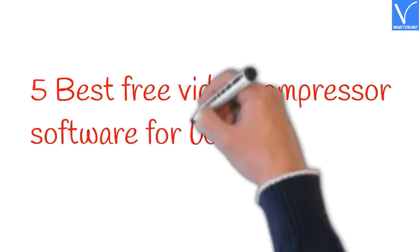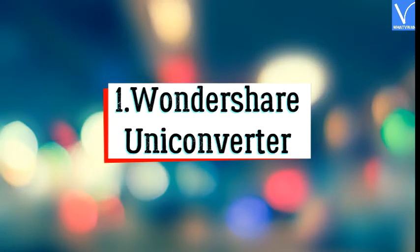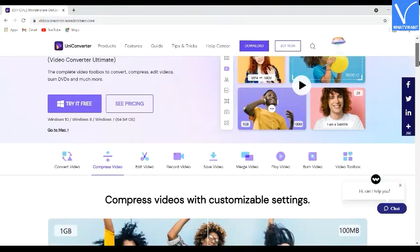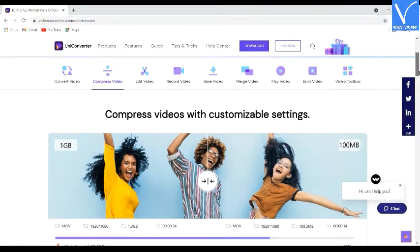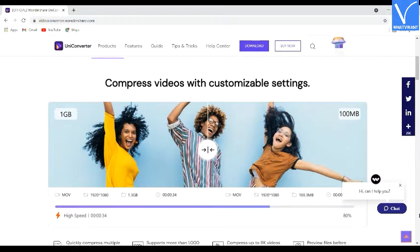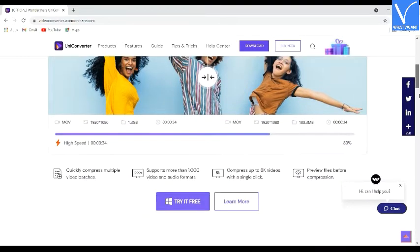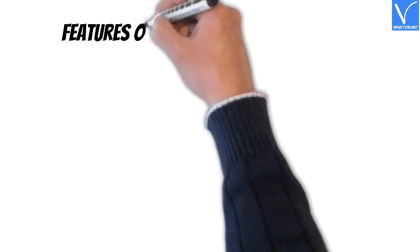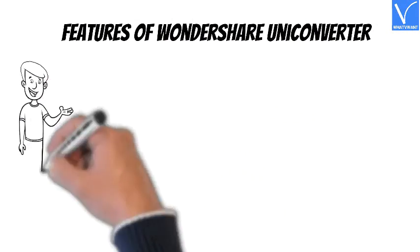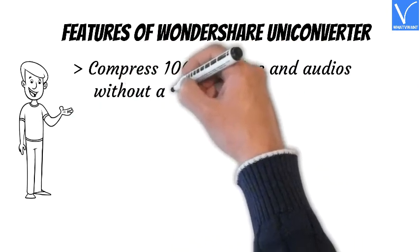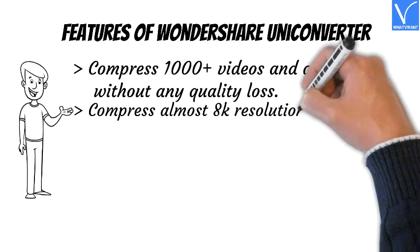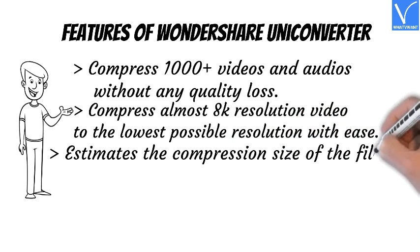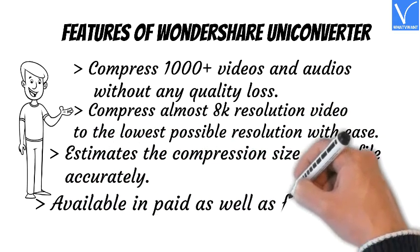5 best free video compressor software for Windows and Mac. Number 1: Wondershare Uniconverter. Wondershare Uniconverter is the best video compression software from the Wondershare family. It is a one-stop video converter for any media file, compatible with both Windows and Mac OS, and has powerful compressing features with easily customizable settings. Features: compress 1000+ videos and audios without quality loss, compress up to 8K resolution video to lowest possible resolution, accurately estimates compression size, and available in both paid and free versions.